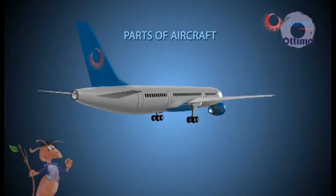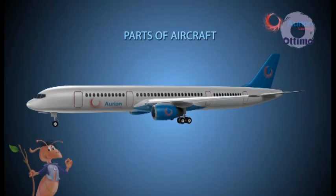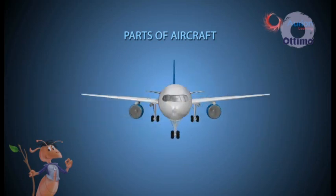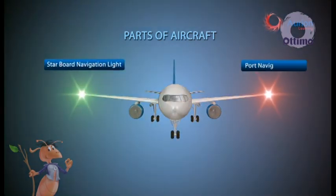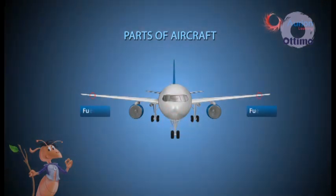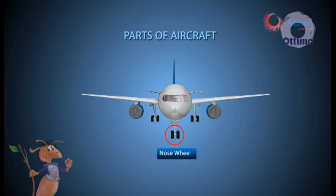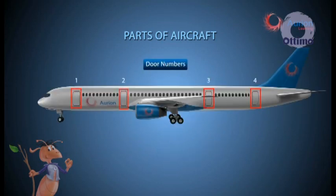Now let us take a look at some of the aircraft terminology: Starboard and port navigation light, anti-collision light, fuel vent, engine numbers, nose wheel, door numbers, undercarriage.